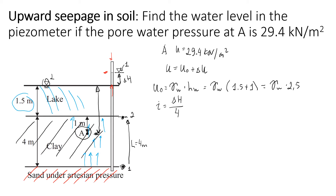This is the delta h we need to find. The easiest way is to take the difference between the two water levels — the first water level and the second water level. For point A, we rewrite the equation as delta h equals hydraulic gradient times L, then adjust it for point A specifically, giving delta h at point A equals hydraulic gradient times L_a.